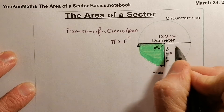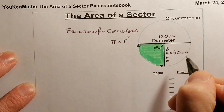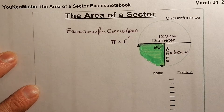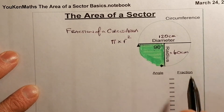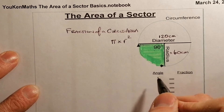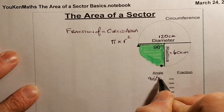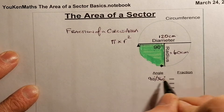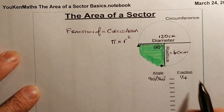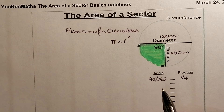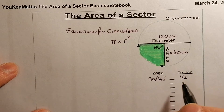So the radius equals half of 120, which gives me 60 centimetres — that's the first thing I need to do. I know it's going to be a fraction of the circle, and the fraction we've got is 90 degrees. If I think about 90 divided by 360, that gives me a quarter. I ran through this in the length of arc calculation, but I'll just do it quickly again here.